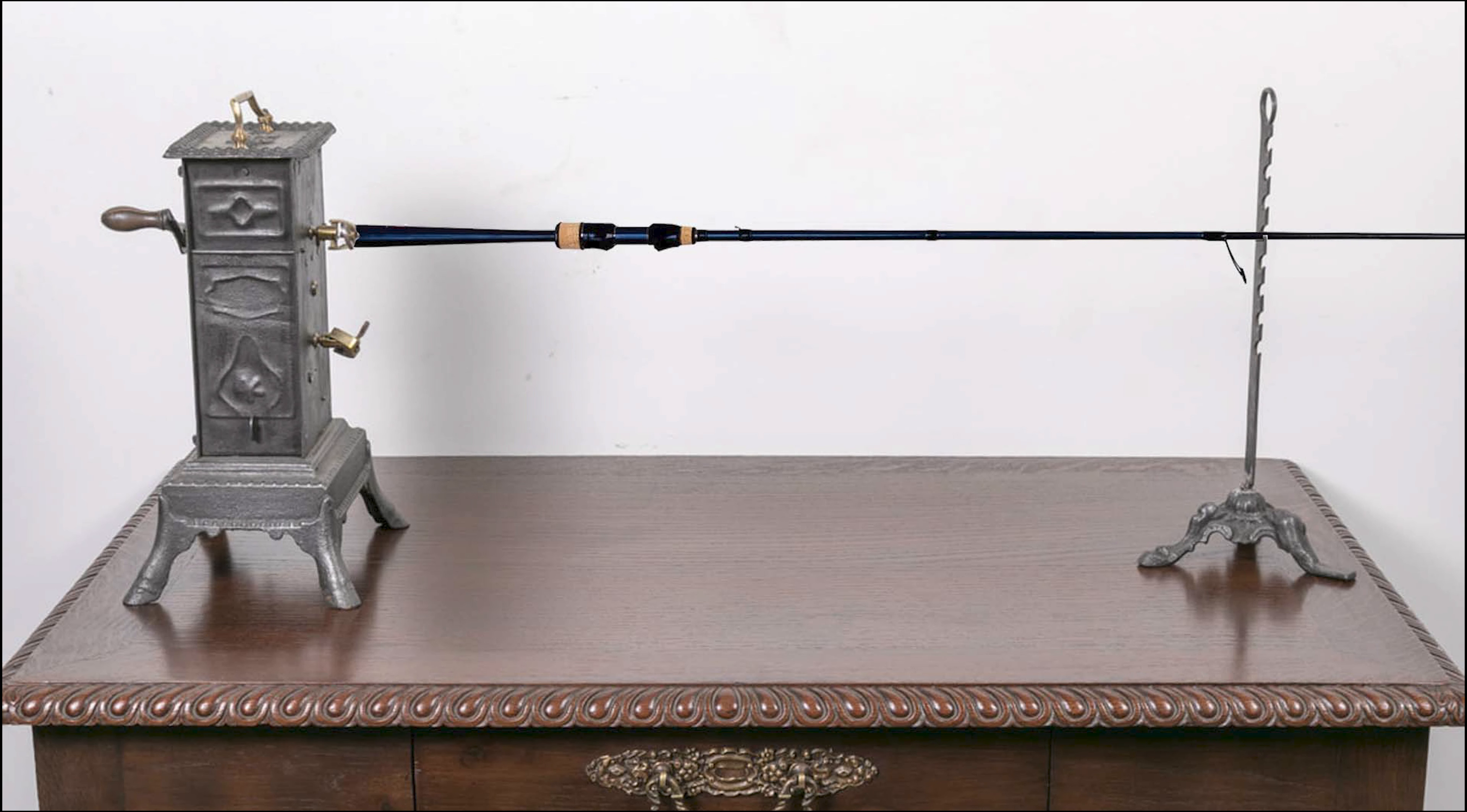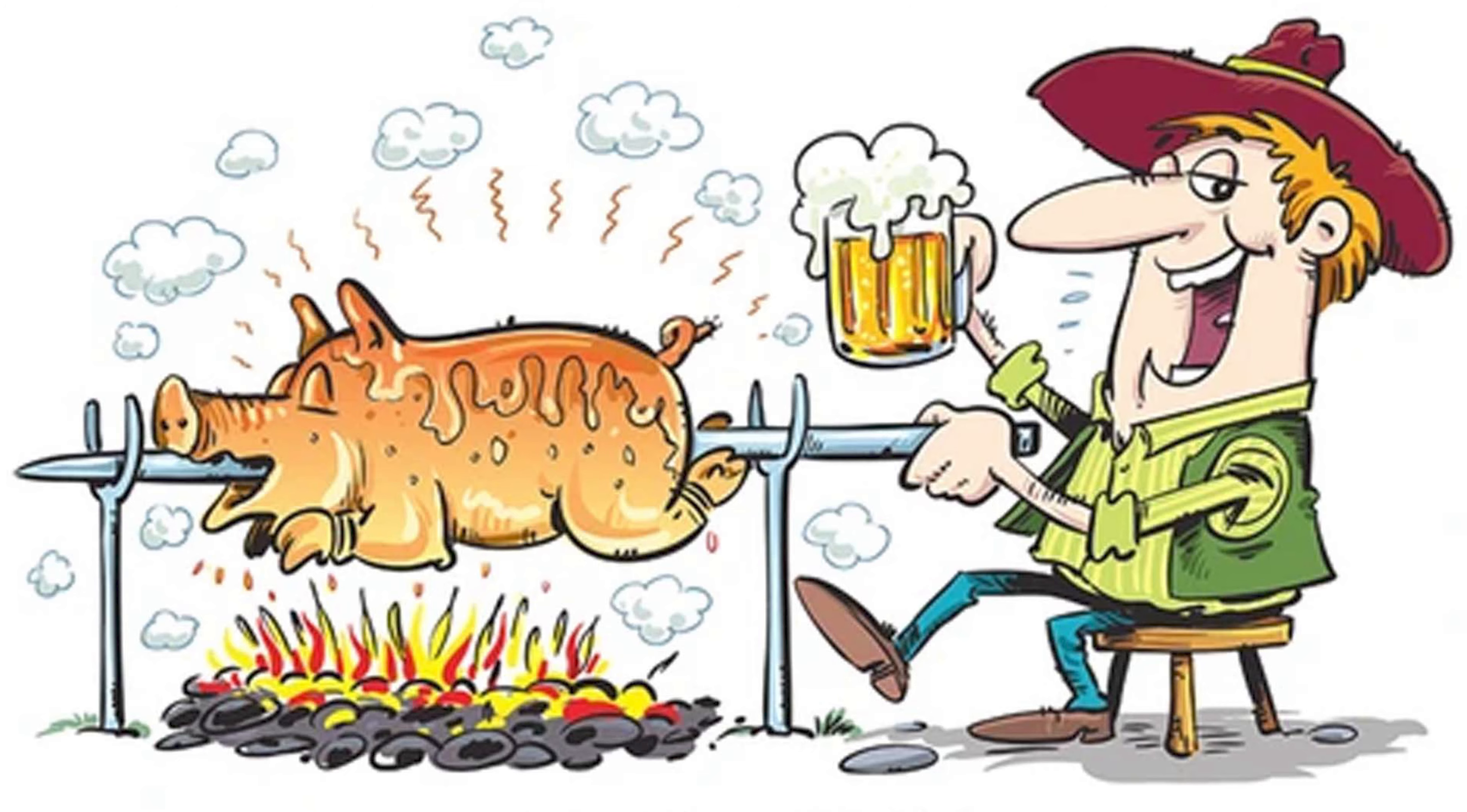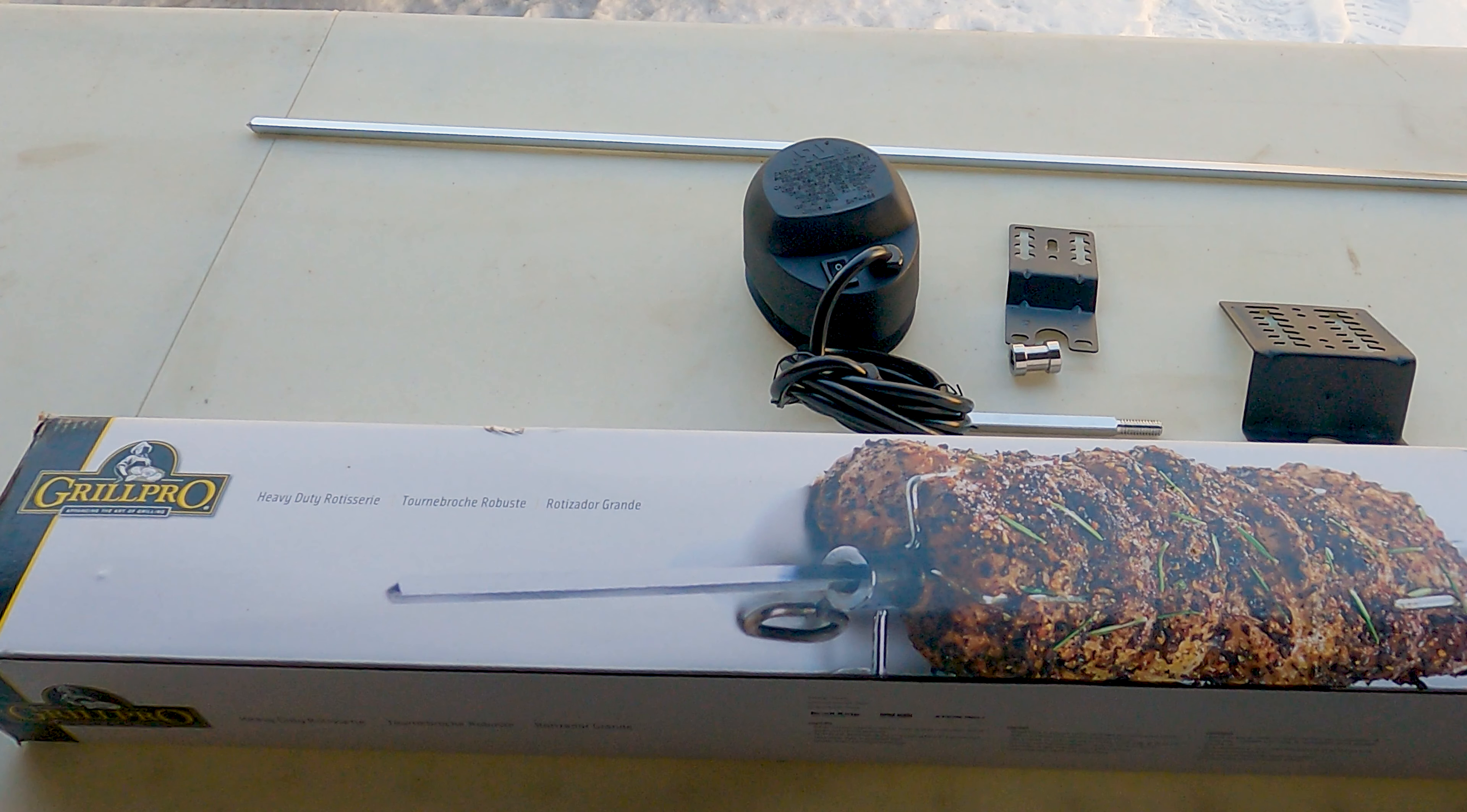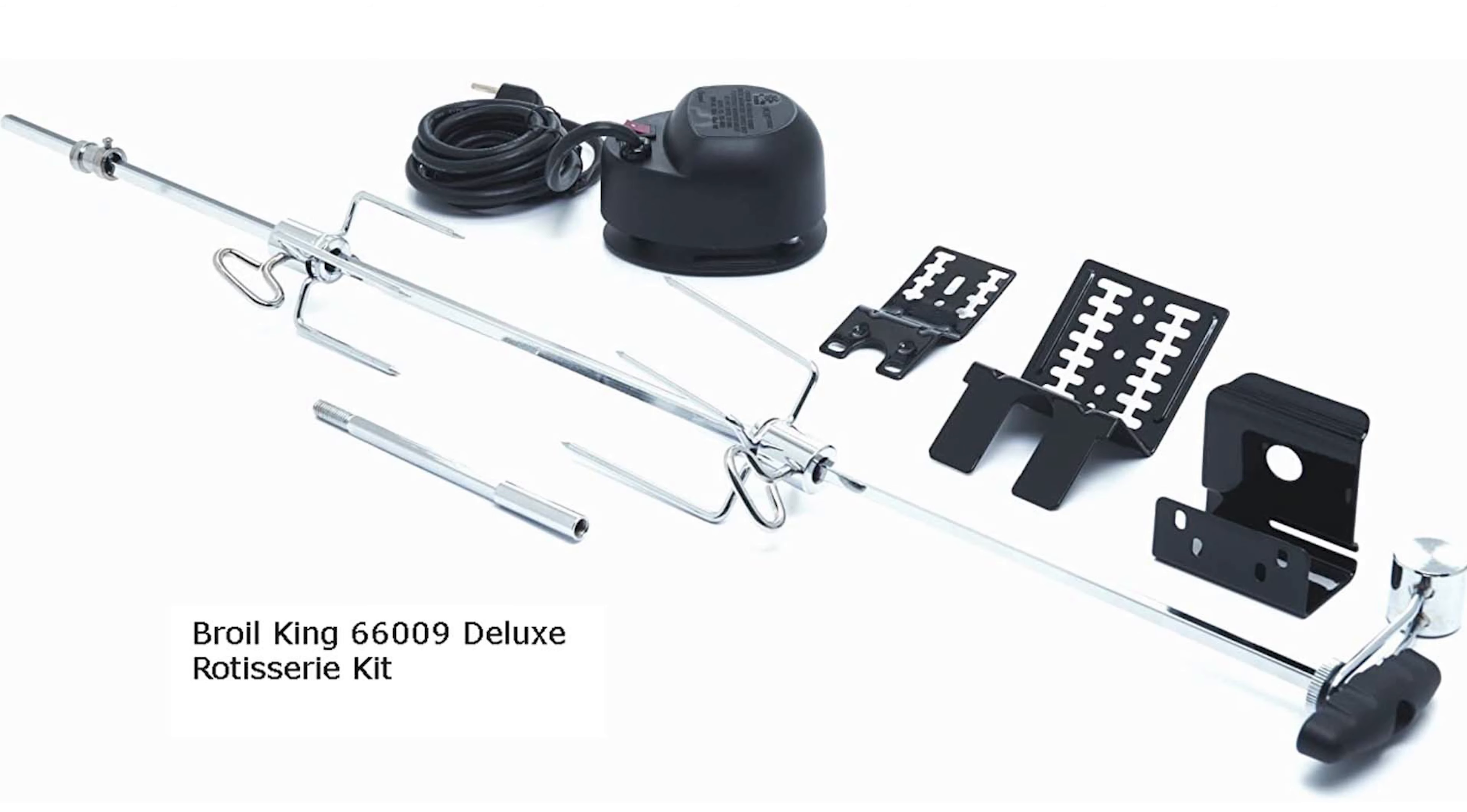This project utilizes a barbecue rotisserie kit. While they can be expensive for new ones, used ones are always available on Kijiji or Facebook Marketplace. The adaptation I did for my first DIY rod dryer allowed me to easily convert it back and forth for barbecue use, so it was dual purpose.